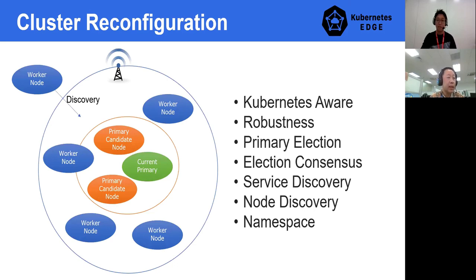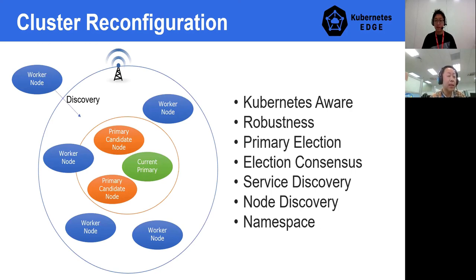We expect this requirement for cluster reconfiguration in edge devices. As you can see in the picture on the left, there are some candidates for primary service. Technically, all devices can be primary. They will do leader election within candidates, and once primary is online, that service is notified to all worker nodes. Even candidate nodes become worker nodes as well. If worker nodes come online in the cluster network, they will dynamically detect the service is available and participate in the cluster system, and vice versa. Also, namespace should be applied — think about the use case of multiple cluster networks in the same facility for factory and logistics.